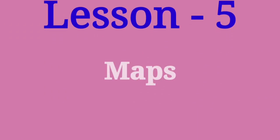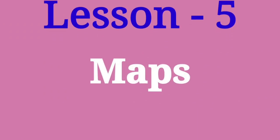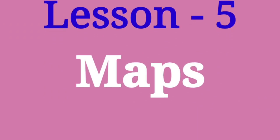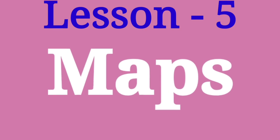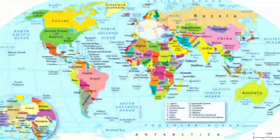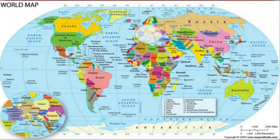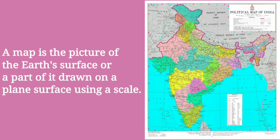Let us know the key points of the lesson on maps. A map is the picture of the earth's surface, or part of it, drawn on a plain surface with the help of a scale.